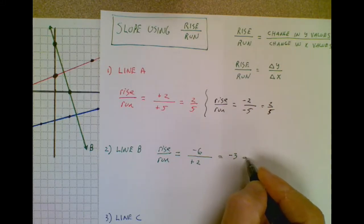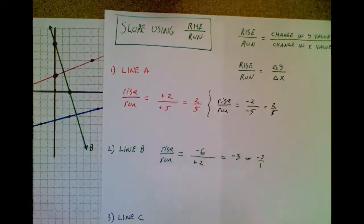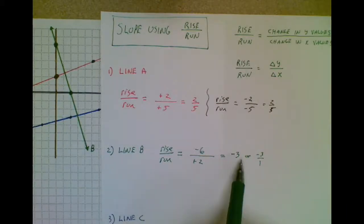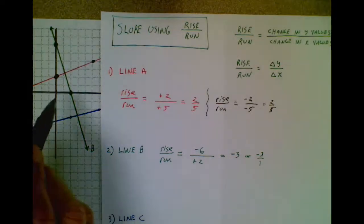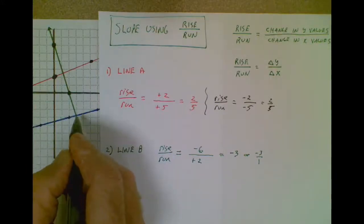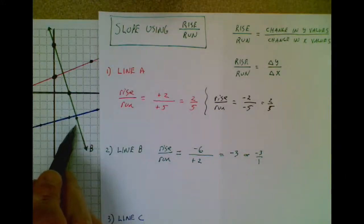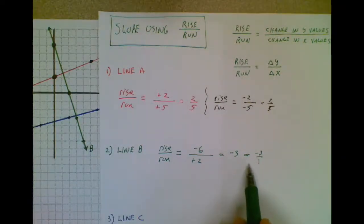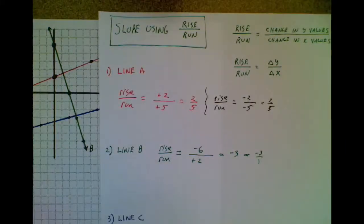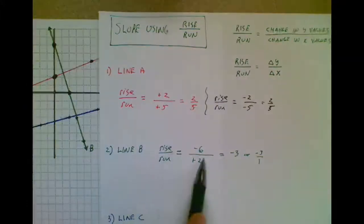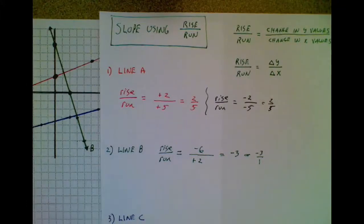And some people would maybe call that a negative three over one so they can keep it in fraction form. So what this is telling me is on this green line, I will always fall three and move to the right one. Let's try that out. I go down three, move to the right one, I'm still on the line. Change in y of negative three, change in x of positive one, I'm still on the line. So that slope is going to work forever and ever in any direction on that line. And if somebody else traveled from here to here, their work might look slightly different, but they would end up with the same answer that I have right there.